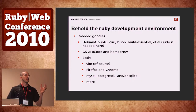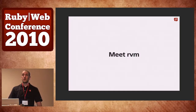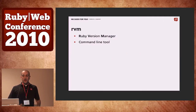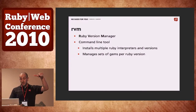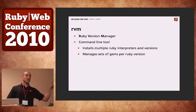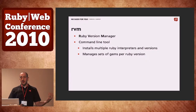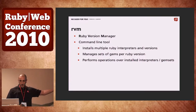The biggest thing you must install in your Ruby development environment is my friend RVM. Who's using RVM? Heck yeah. Hopefully you learned something new today. RVM stands for Ruby Version Manager. It's a command line tool. It installs multiple Ruby interpreters and manages sets of gems per Ruby version, which is huge.